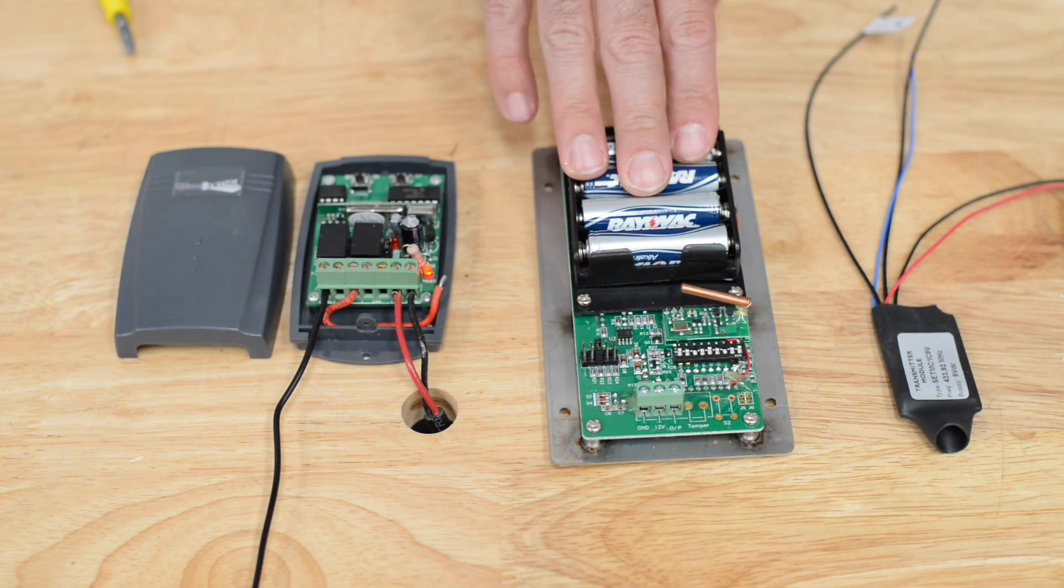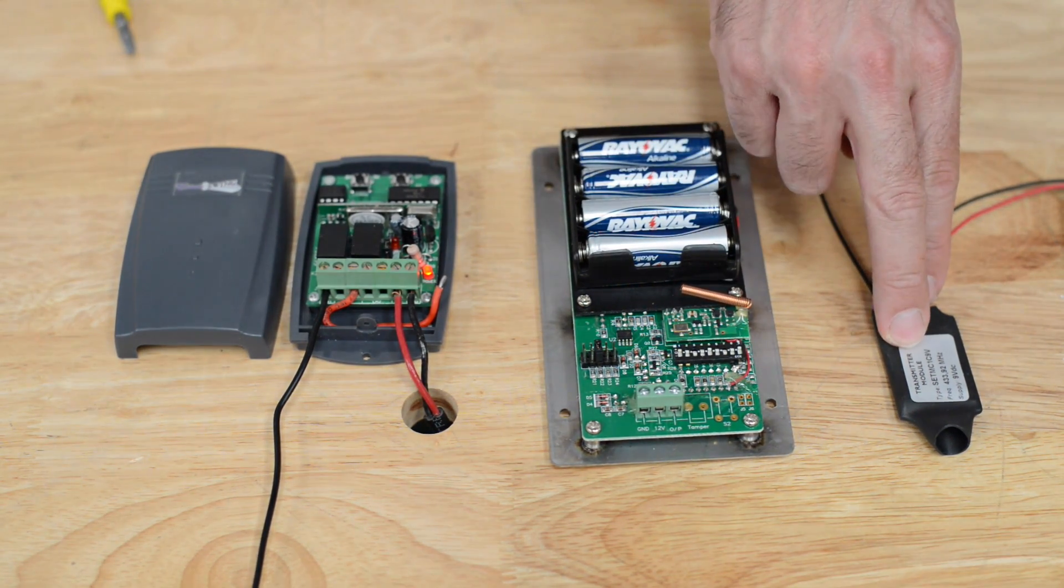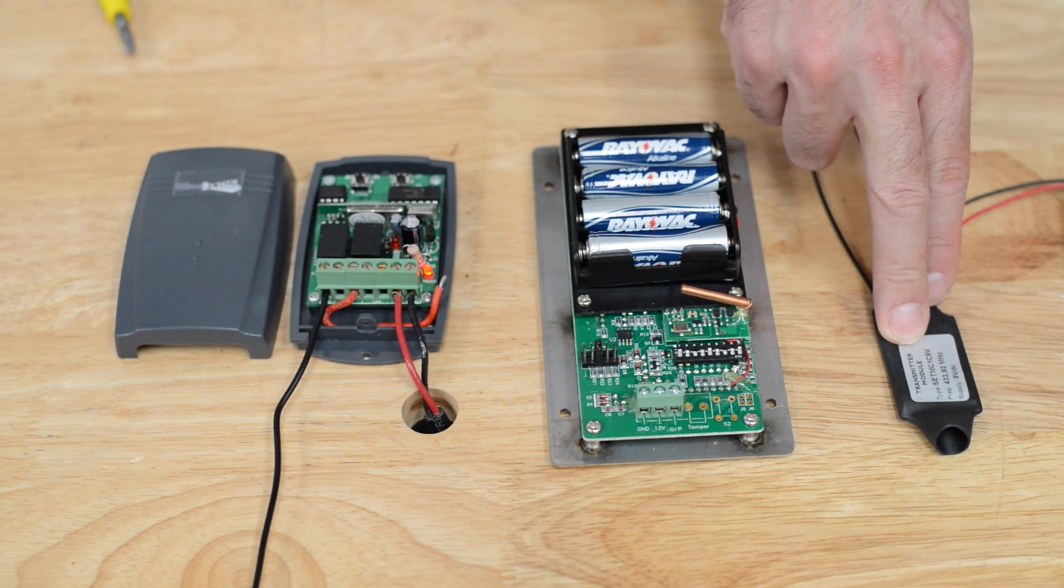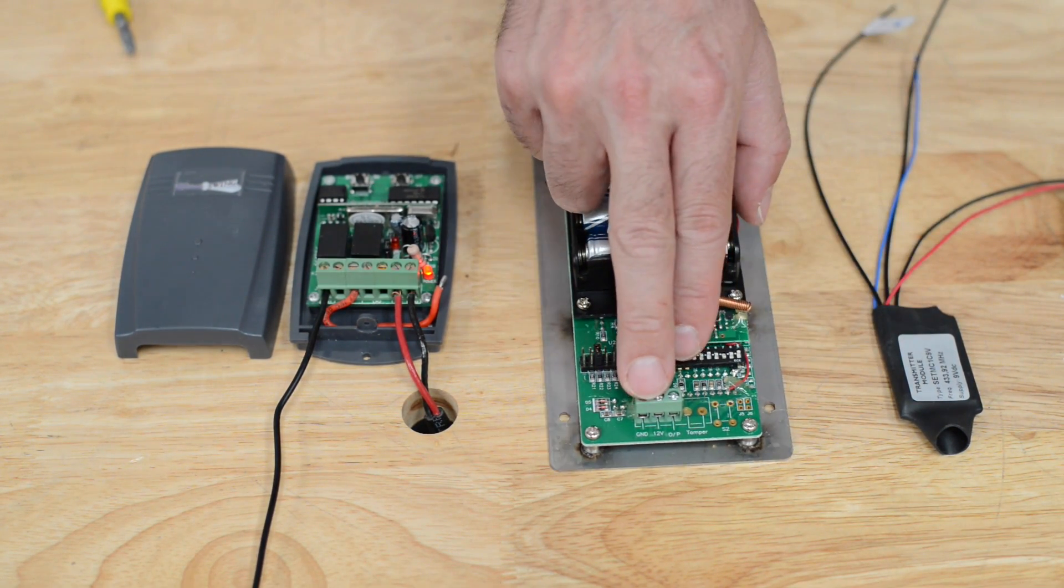To achieve 433 megahertz, we have to have an adapter that transmits a signal through 433 megahertz. This adapter gets wired into the bottom of the keypad.